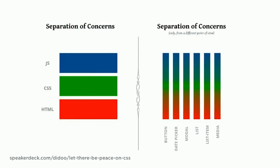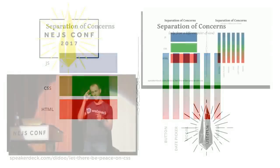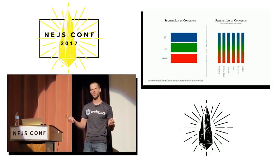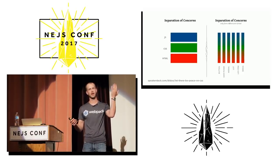For the longest time we've talked about separation of concerns as a separation of JavaScript, HTML, and CSS. I don't believe that's a valid way to think about separation of concerns anymore. Separation of concerns today is a matter of components — I want to separate my concern of a button from my concern of a date picker from my concern of a modal dialog. The component is the concern we're separating.